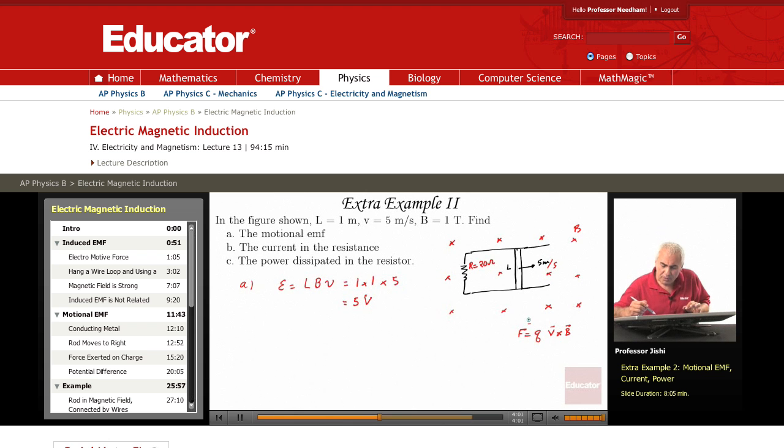So if I have a positive charge, if Q is positive, the direction of the force is the same as the direction of V cross B. So what is the direction of V cross B here? V is to the right and B is into the page.